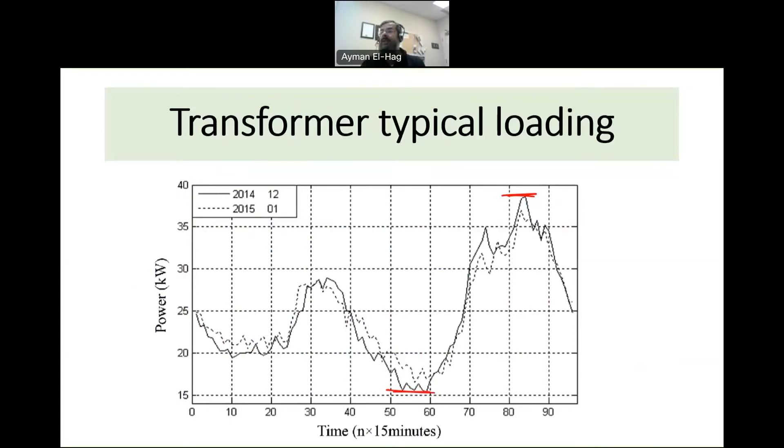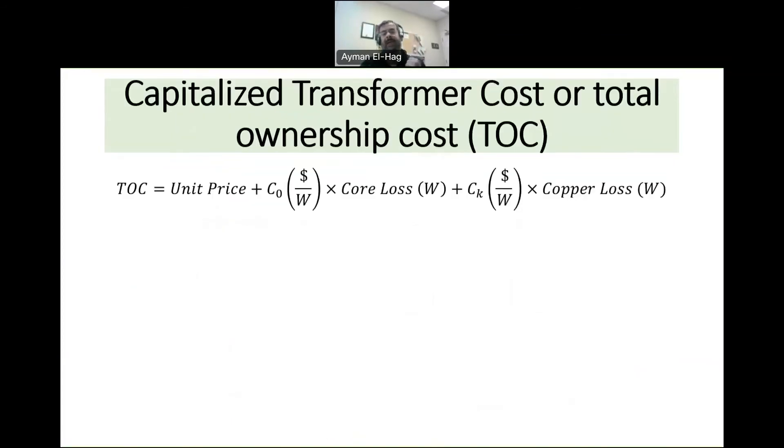Always the transformer is energized regardless if we have load or we don't have load, if we have a full load or a little load. Always the voltage is applied to the transformer 24/7, which means that the core loss is 24/7, unlike the winding loss which varies during the whole day.